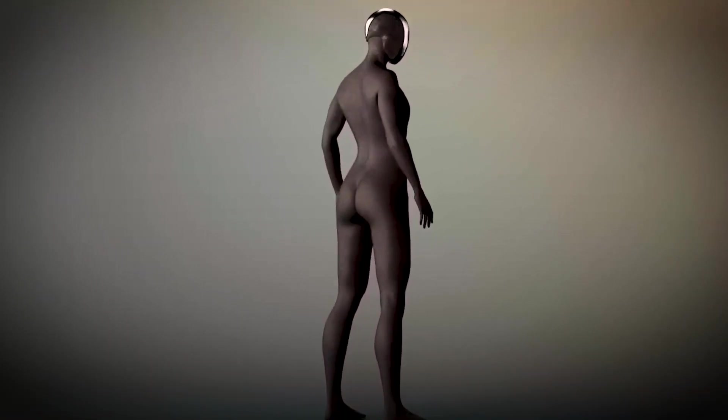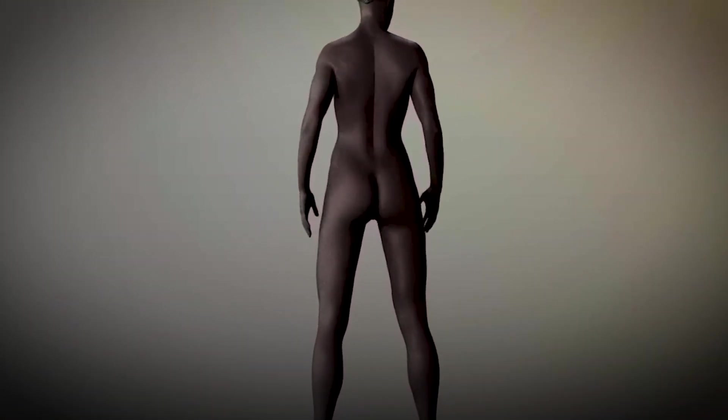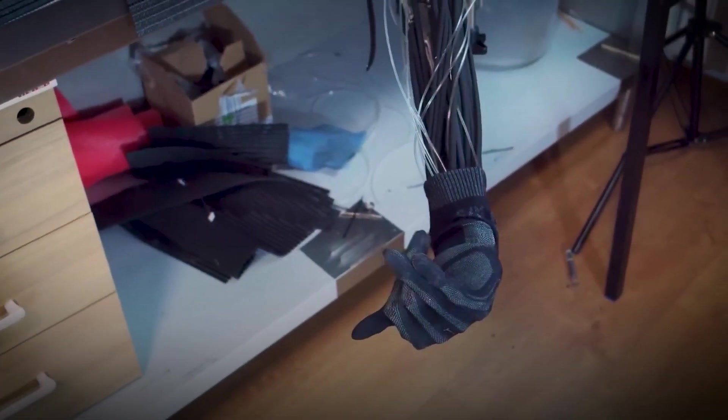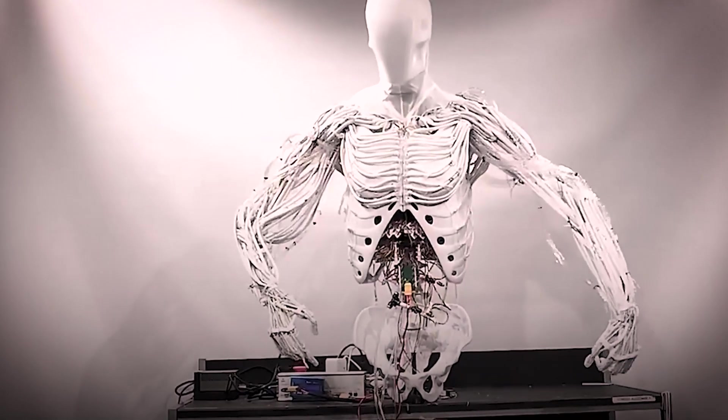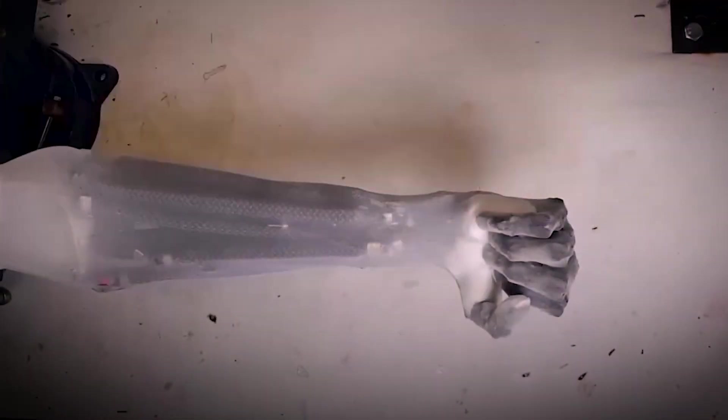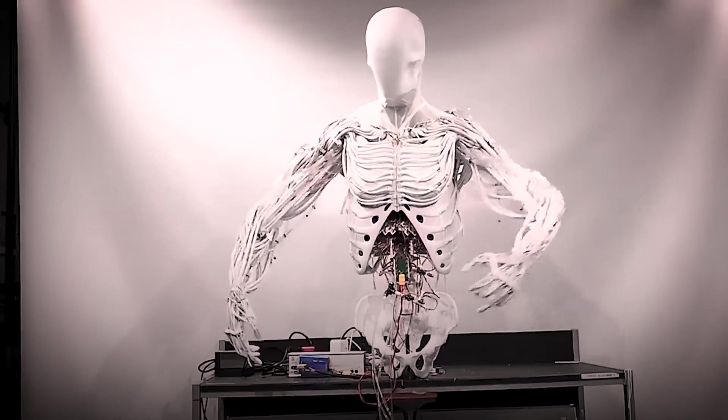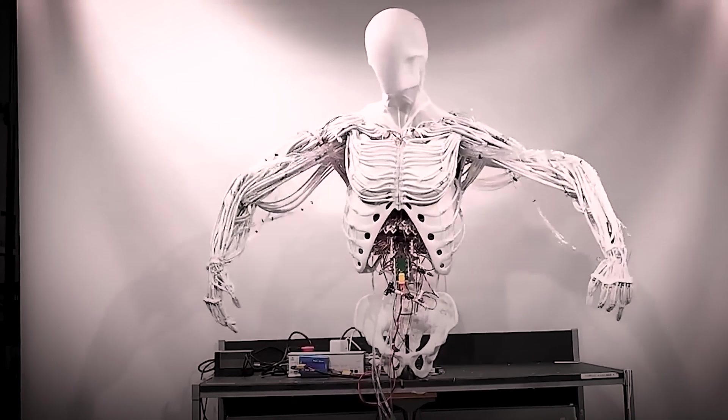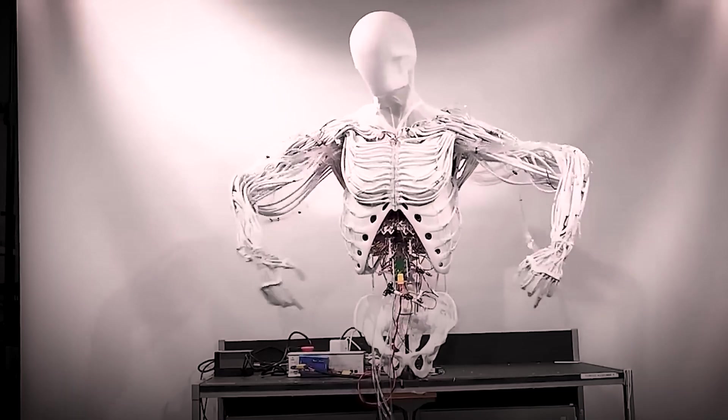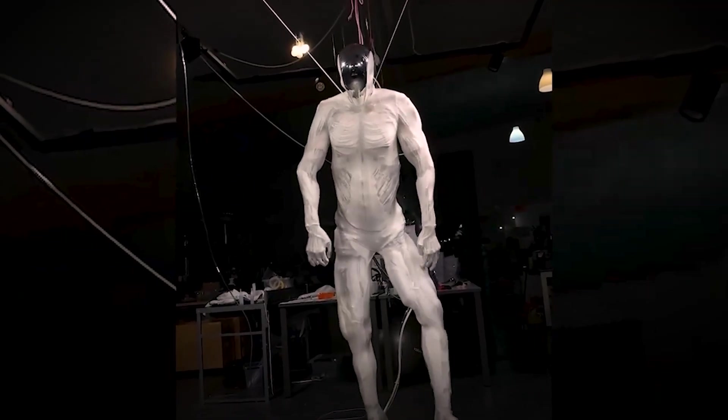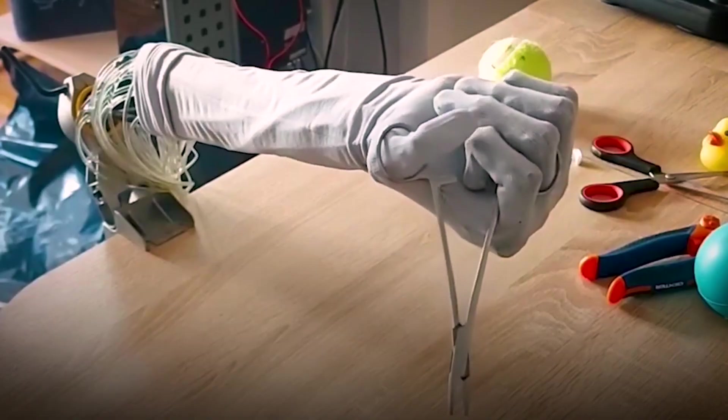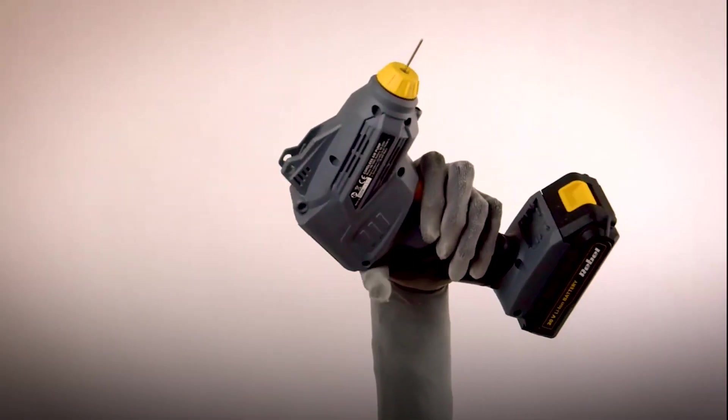And no, this isn't some stiff metal mannequin wobbling around like it's in a school play. Clone Alpha moves like you. Okay, maybe a bit smoother if we're being honest. Clone Robotics posted videos on social media that went instantly viral. People were floored watching a robot that could walk with a gait so natural you'd swear it just finished leg day at the gym. Its movements mimic the micro-adjustments we humans make without thinking, like walking on gravel or reaching for a glass without shattering it.